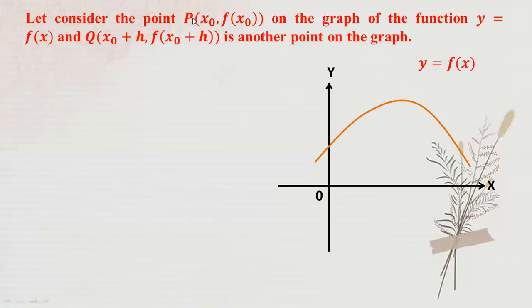On this graph, P and Q are two points. Q has coordinates where x is x₀ plus h. If h is not zero, you need to use x₀ plus h. So Q is another point on the graph.